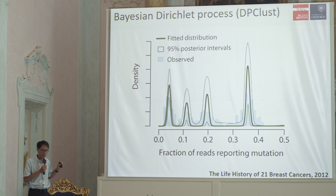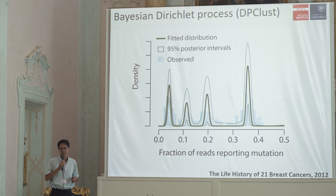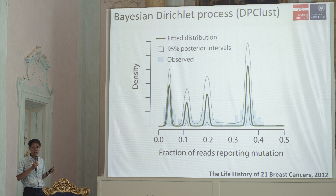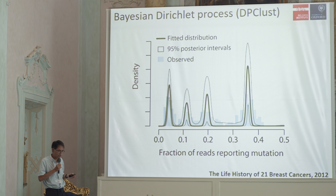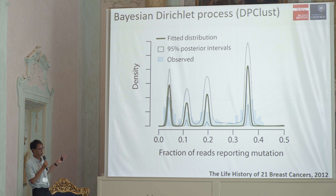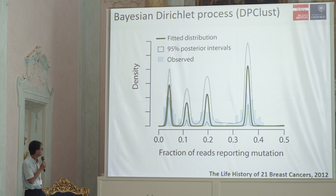To identify these clusters, we clustered them using a Bayesian Dirichlet process, which makes no assumptions about the number of clusters but can use the distribution of the data. We model this as a binomial distribution and were able to pull out these four clusters. Using the copy number and point mutations, we were actually able to reconstruct the final genetic tree.